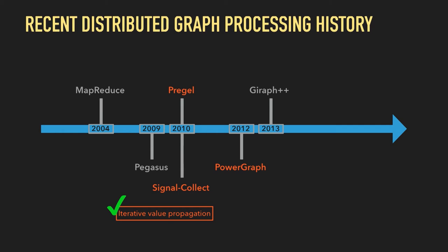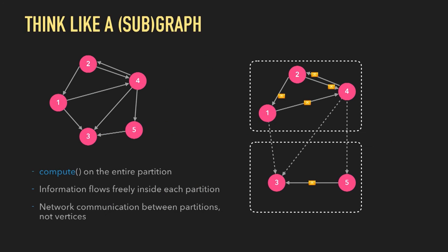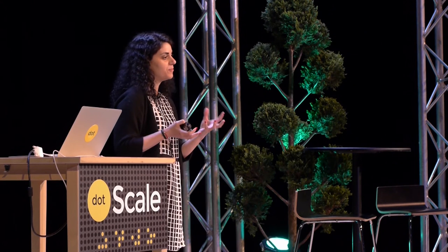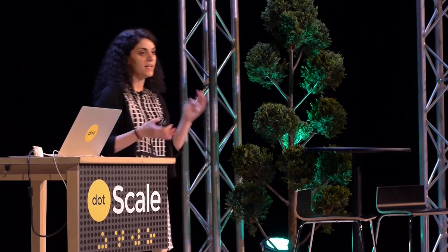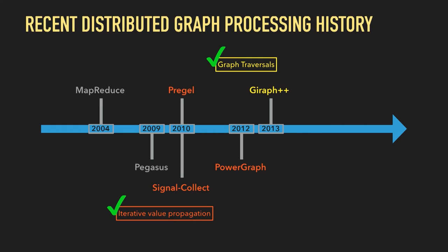Right after PowerGraph in 2013, Giraffe++ introduced a model called Think Like a Graph. The paper is called 'From Think Like a Vertex to Think Like a Graph.' The idea is that instead of applying the compute function per single vertex, you let the compute function access the state of the whole partition. This is a good idea because it lets information flow freely inside the partition and significantly reduces communication. This system proves to be quite good for graph traversal algorithms. The trend continues with nscale, which does neighborhood-centric computation — think like a neighborhood — where you can apply a compute function on custom neighborhoods of vertices.